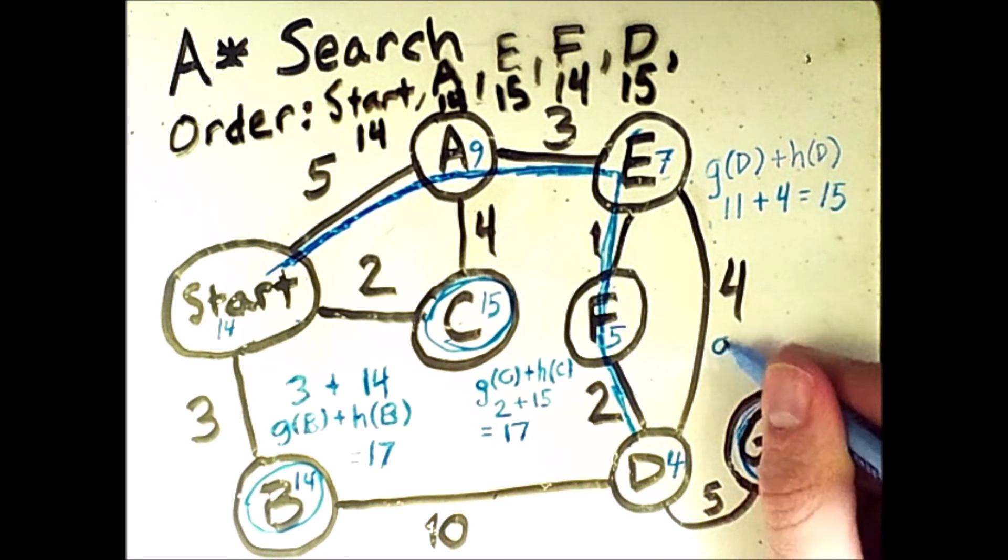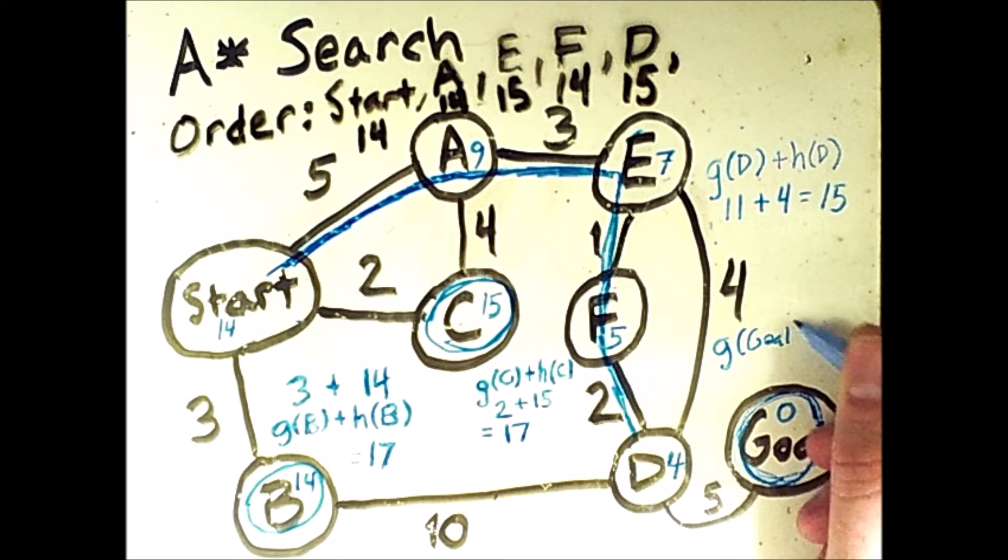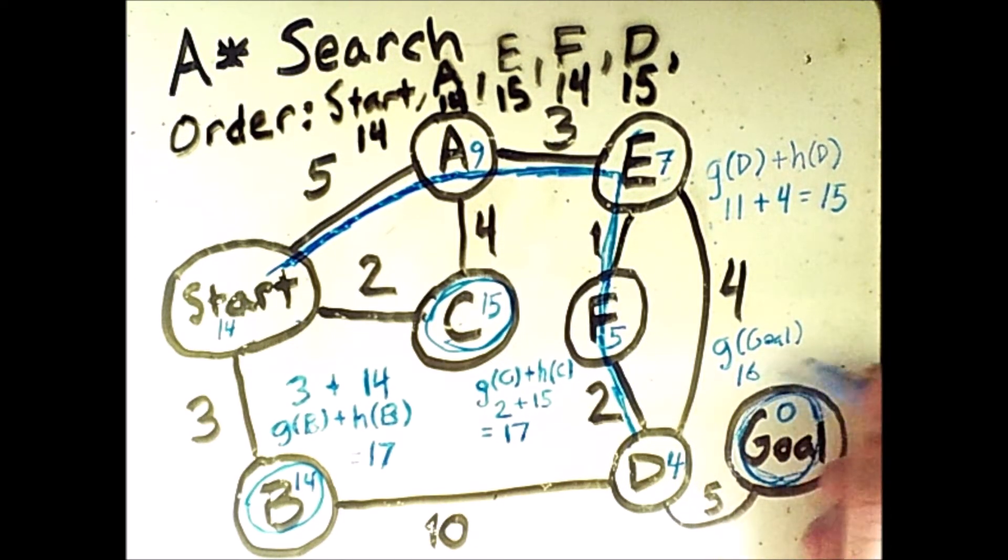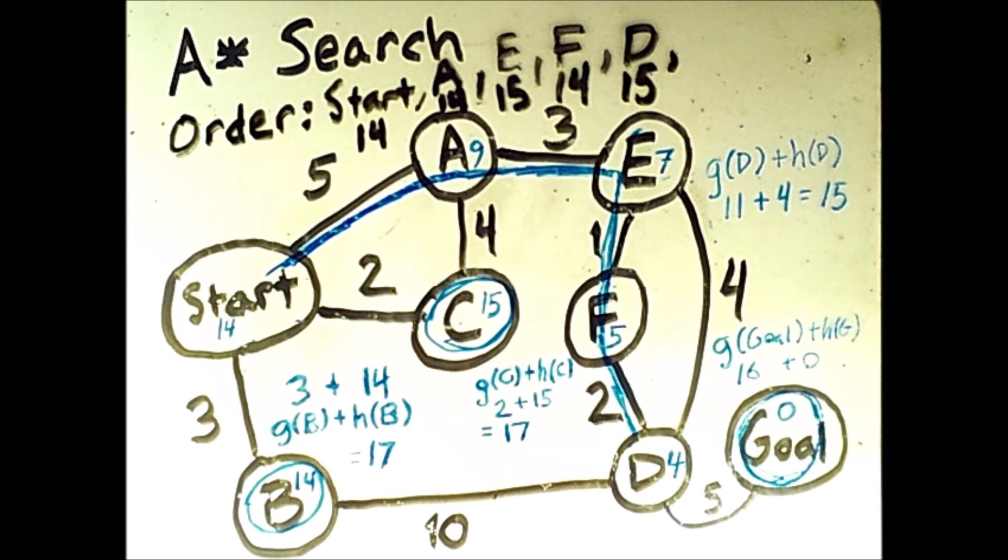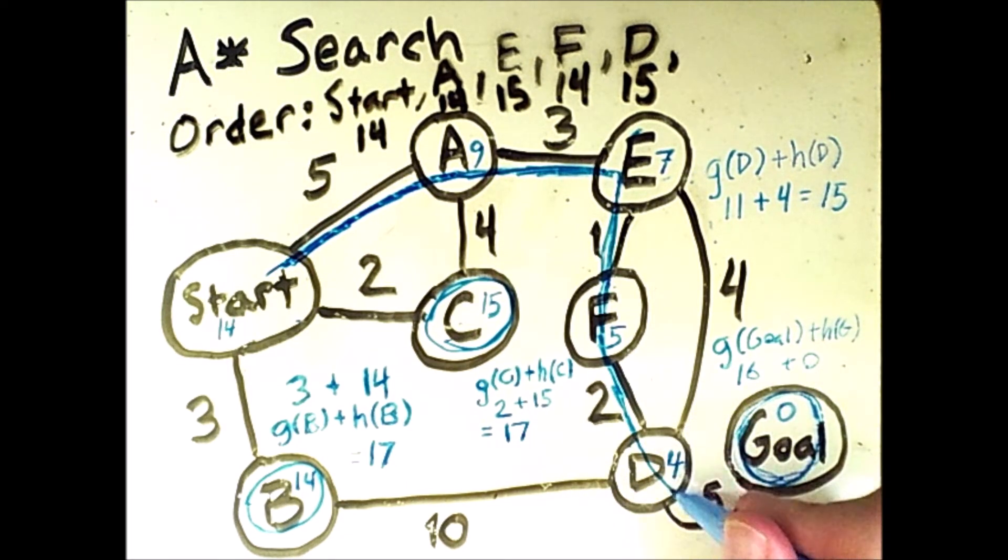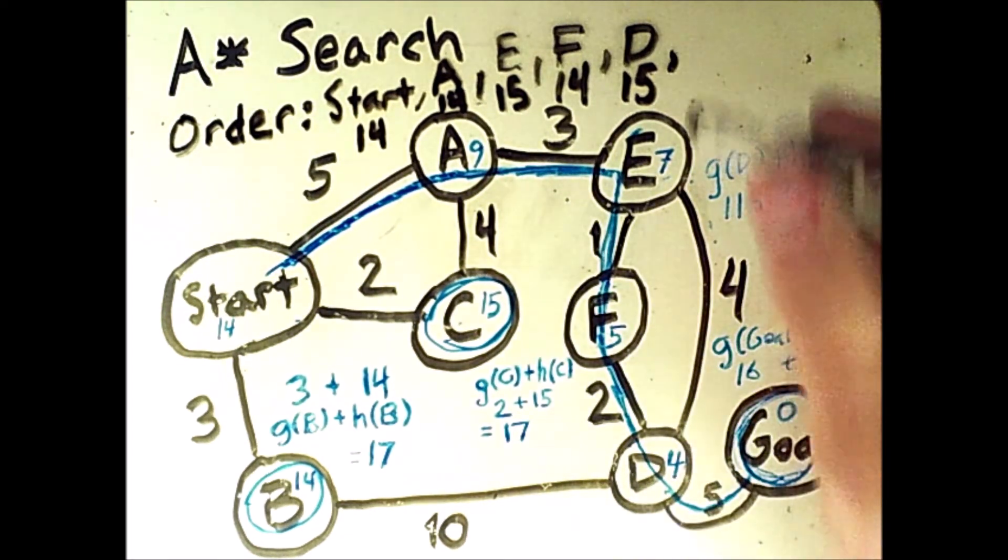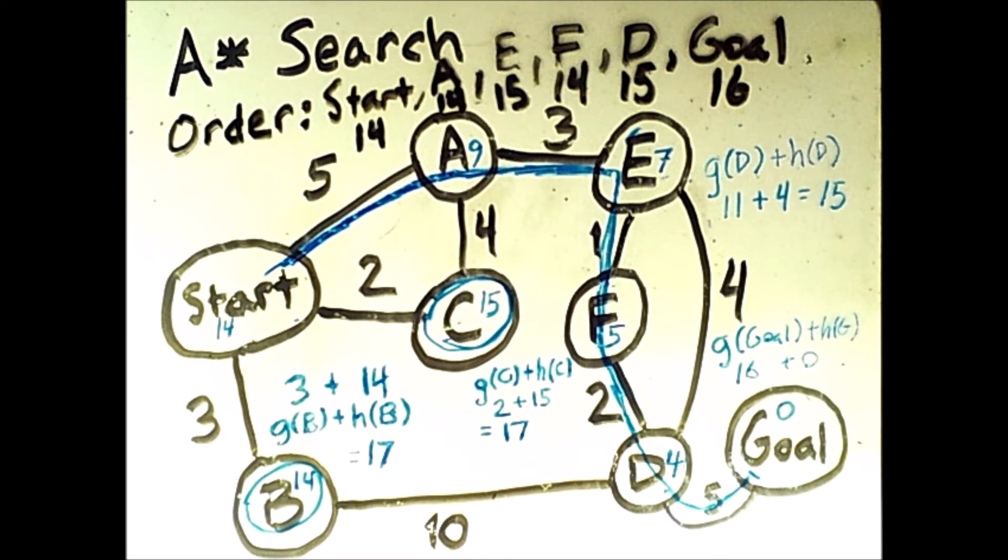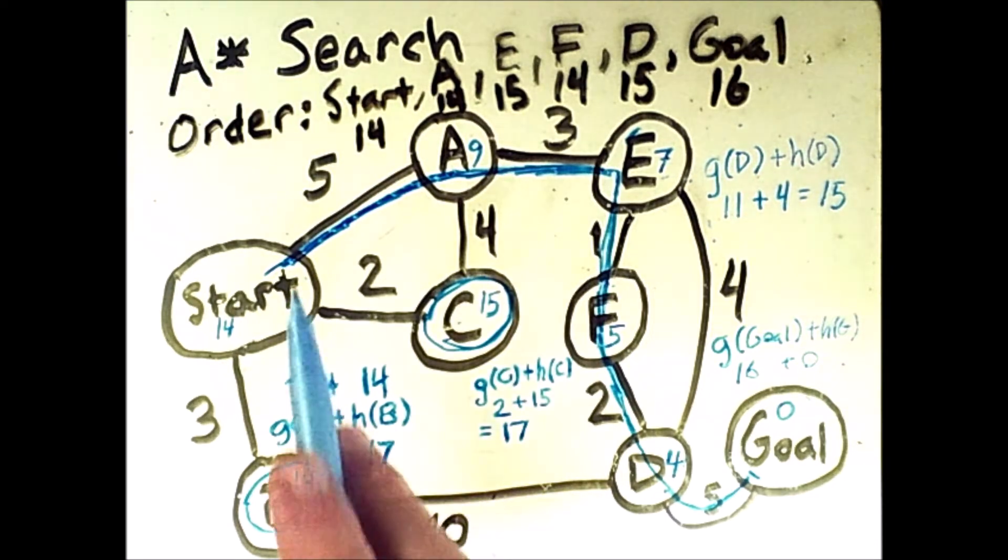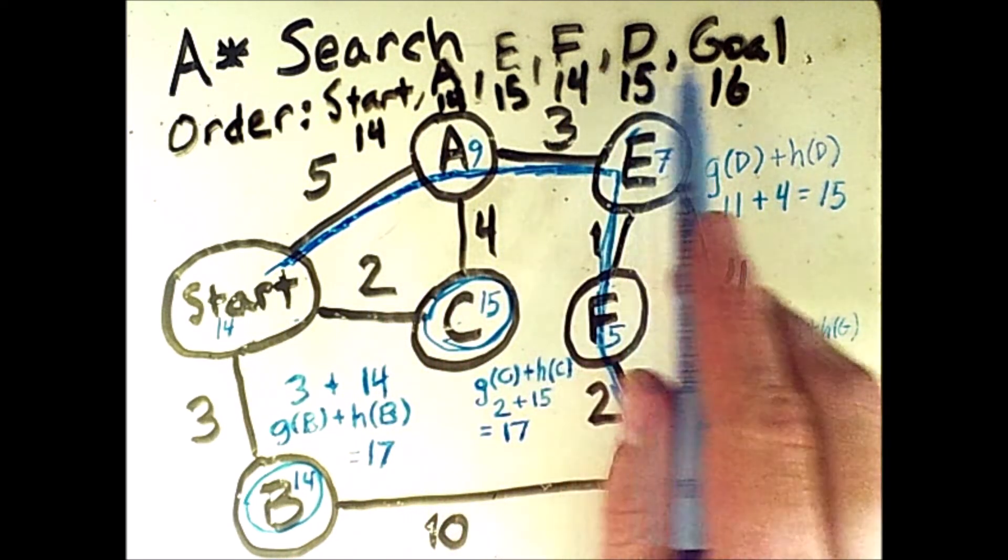The goal has a heuristic value of 0. And we know that the overall cost, if we add in this 5, will be 16. So g of goal, that's 16, plus h of the goal is 0. So that value is 16, and it's also less than the two 17 values there. So we can finally go to the goal, add the goal to our list of search states, and we are done. So we searched the states start, a, e, f, d, and goal.